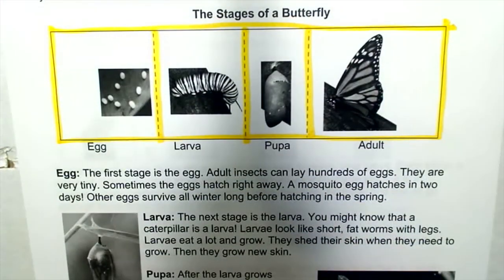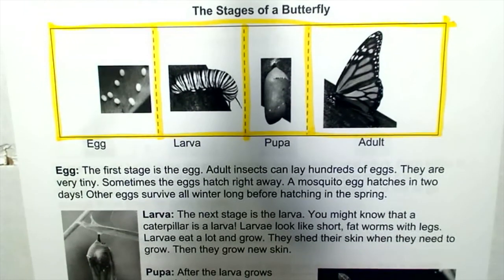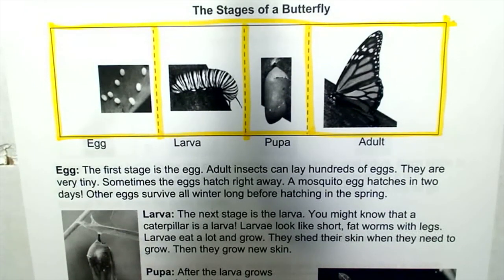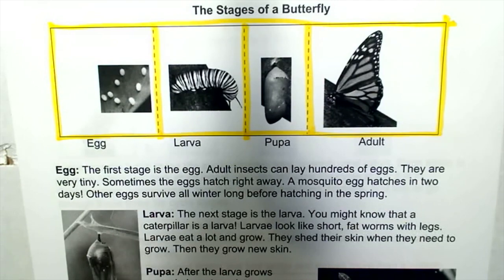The first stage is the egg. Adult insects can lay hundreds of eggs. They are very tiny. Sometimes the eggs hatch right away — a mosquito egg hatches in two days. Other eggs survive all winter long before hatching in the spring.